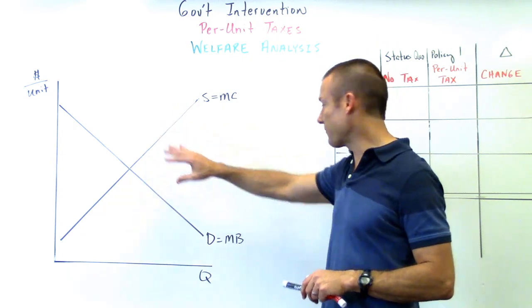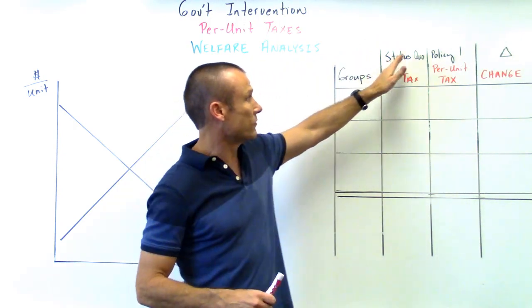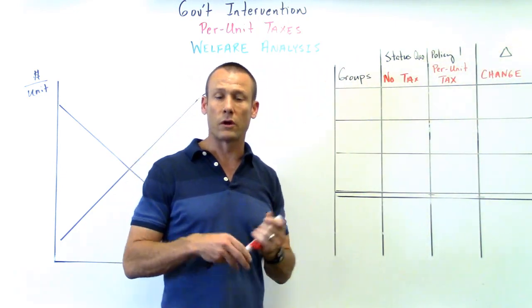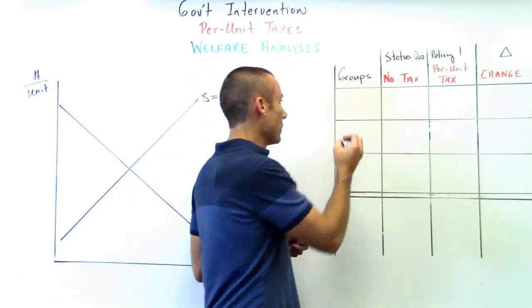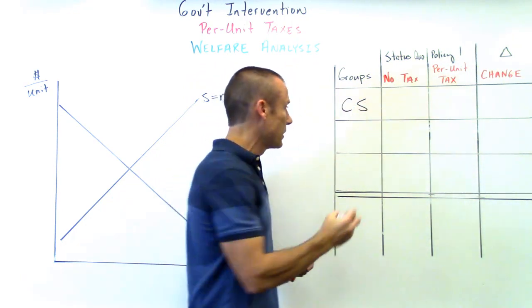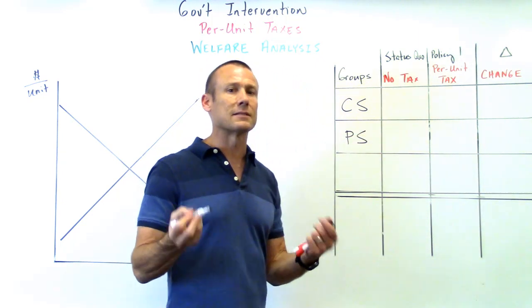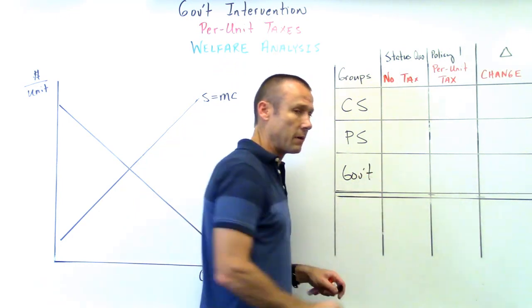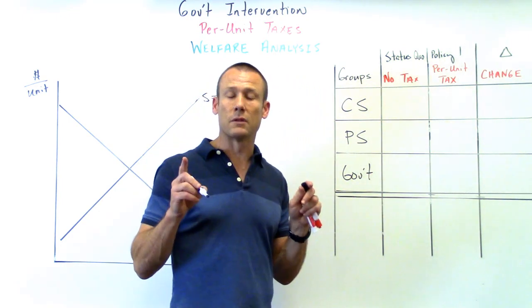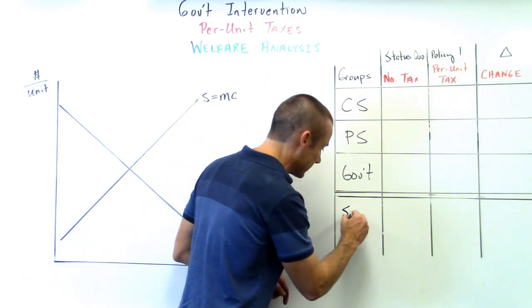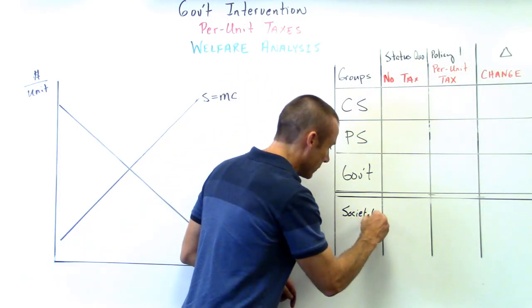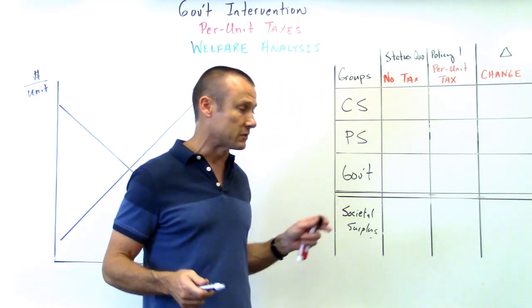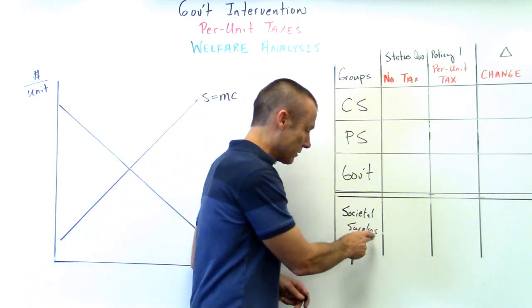I've got my welfare analysis - status quo column, policy column, and the change column. What are the groups we're going to be looking at? Consumer surplus, producer surplus, and since it's a tax, the government's going to get revenue. I've got my double line, anytime you see that double line that means we've got societal surplus down here - societal surplus, societal well-being, society, pretty much all the same thing.